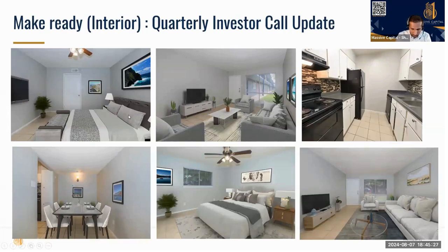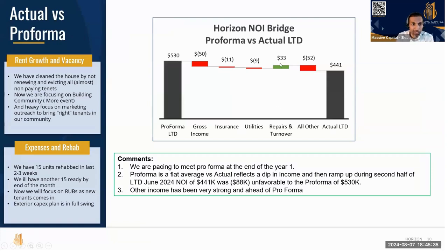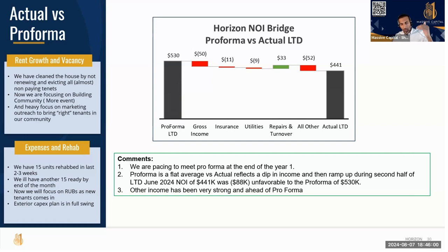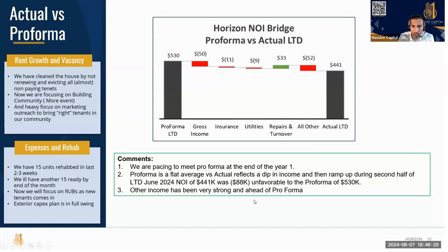Now let's test what we've done versus where we are — the numbers will do the talking. Looking at the middle right, on the YTD our pro forma said we should collect just over half a million dollars; we ended up collecting $441K, about $80K short. Two things: pro forma is flat — we take the yearly figure divided by 12 as our target — but on a turnaround value-add strategy, revenue goes down first then comes back up. We're at the bottom of that slope, and we still think we'll come back to par with the pro forma in the next five months. Our other income has been very strong and ahead of performance.